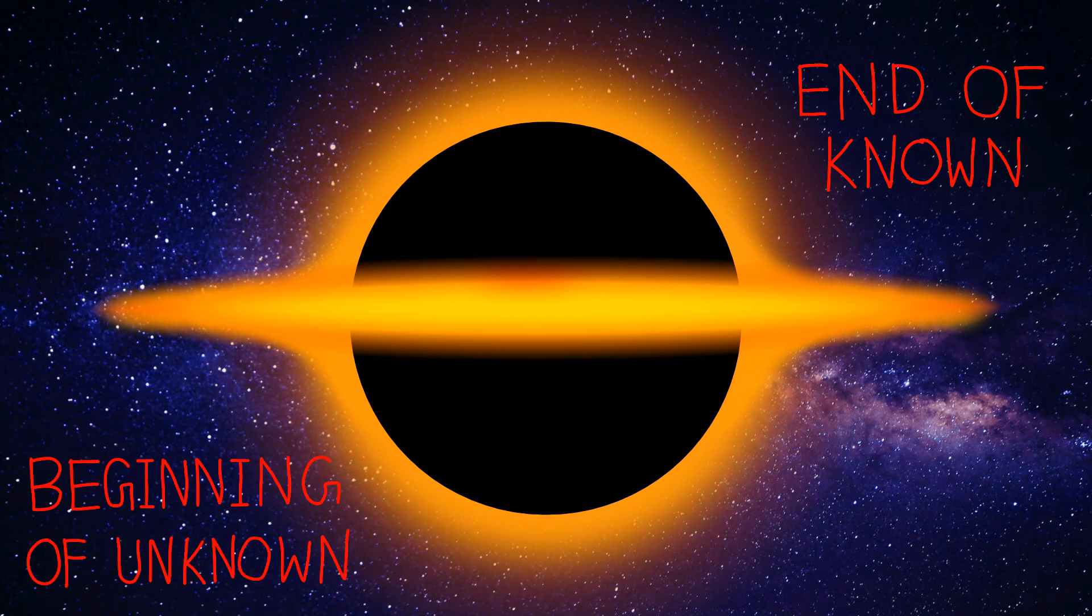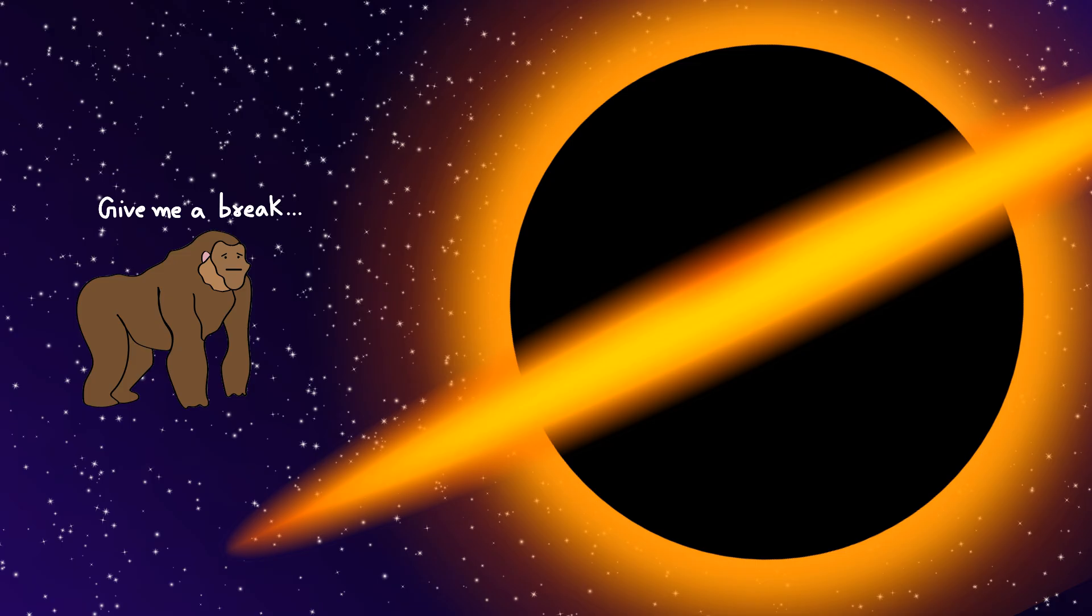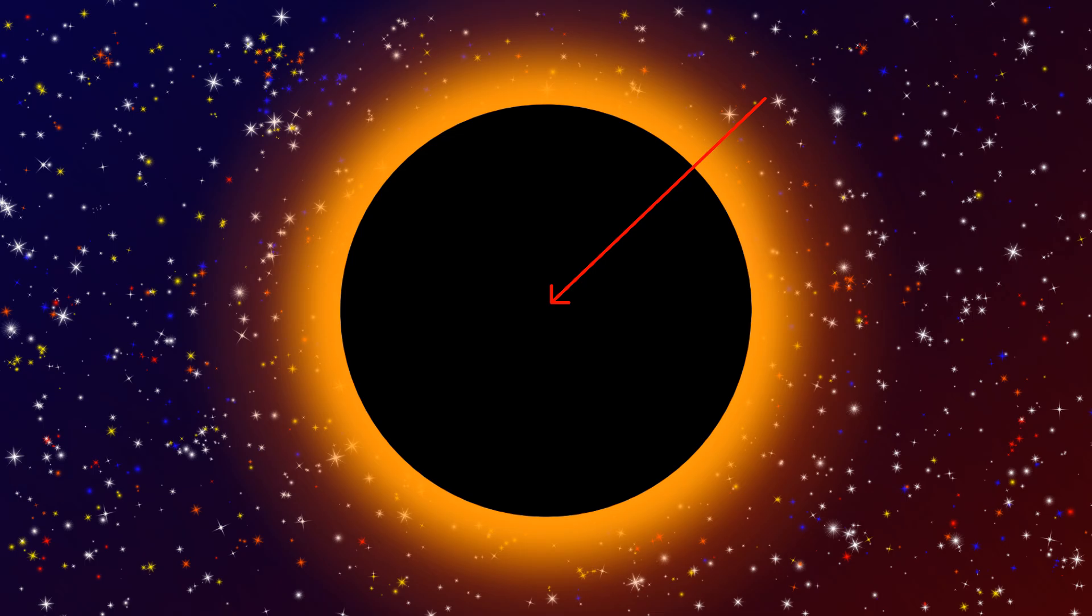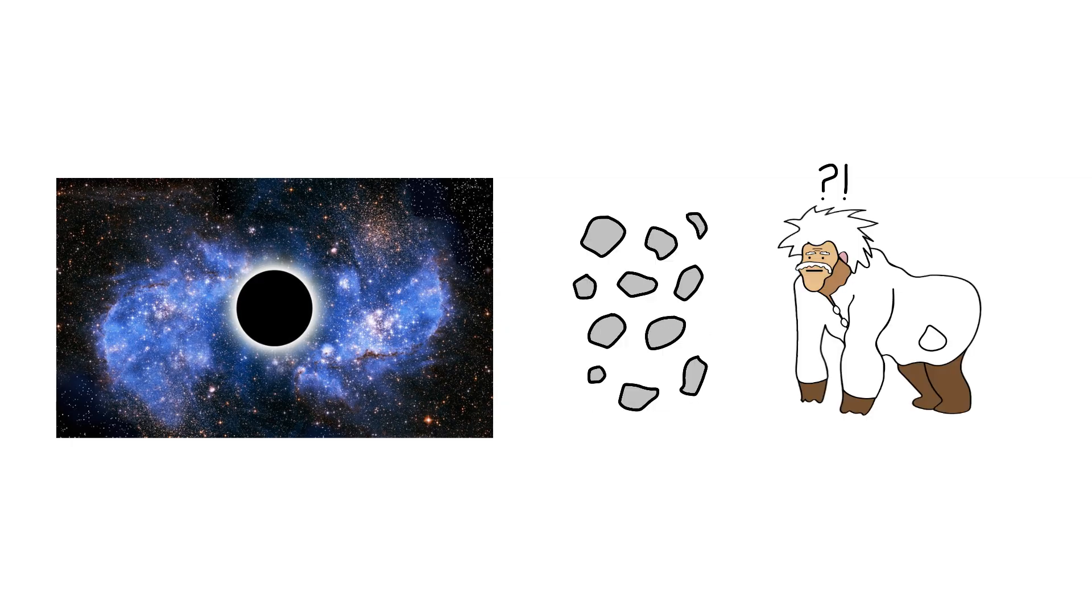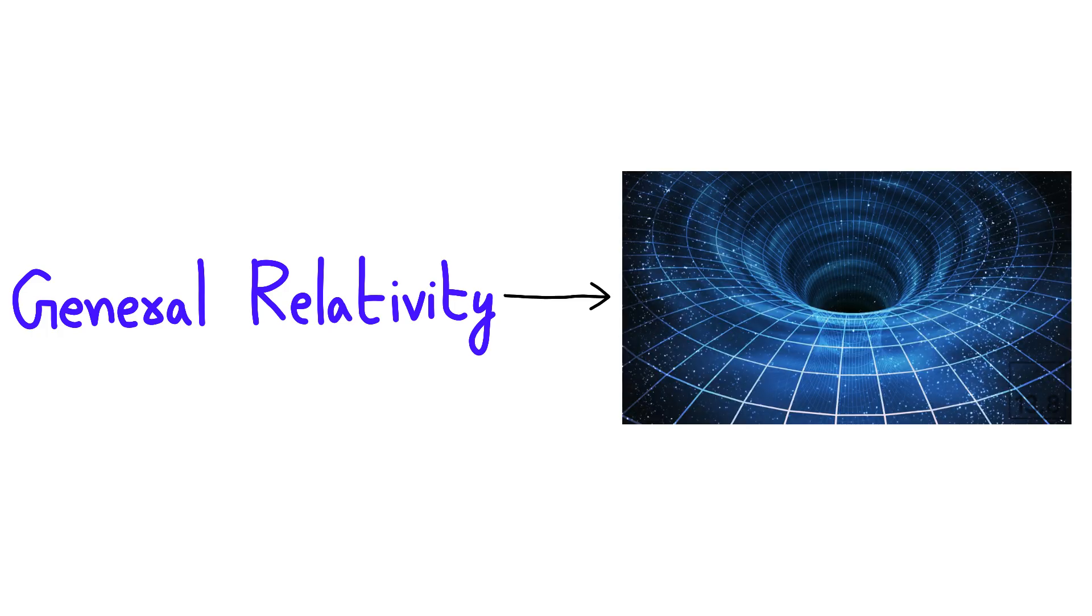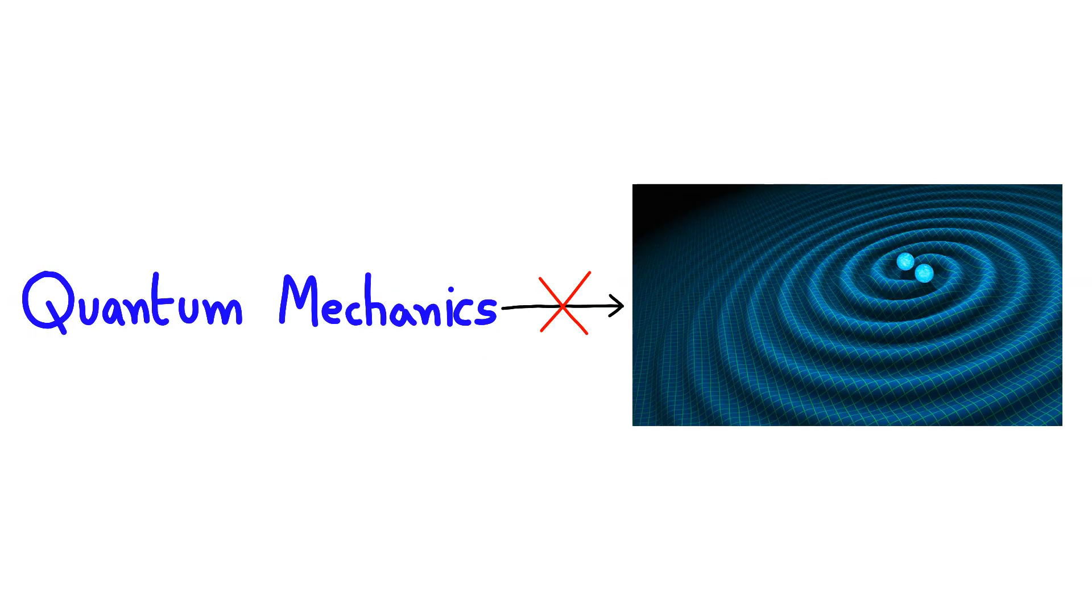But monkey's not done with black hole terror yet. At the heart of every black hole lies something even more frightening than the event horizon: the singularity. This is where the universe gives up trying to make sense and just starts screaming. The singularity is the point where all the mass of a collapsed star gets crushed into infinite density. Not very dense, not extremely dense—infinite density. It's like trying to squeeze an entire jungle into a single banana seed, then squeezing that seed into nothing at all.